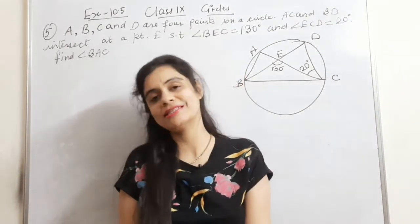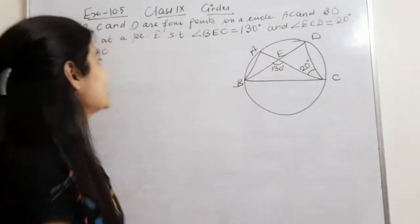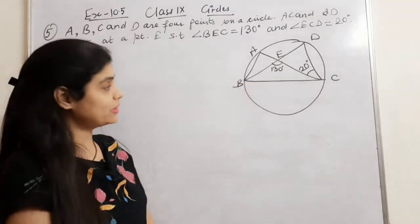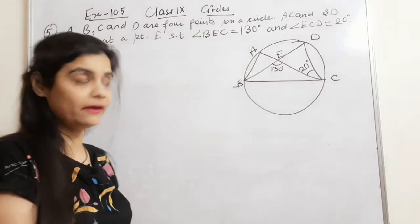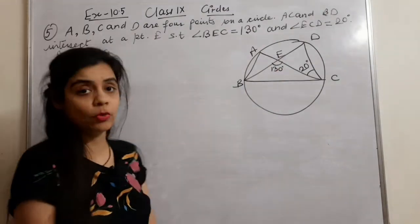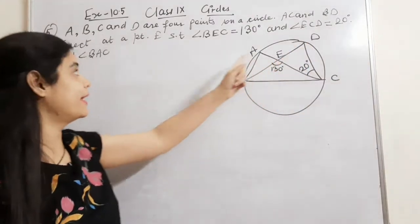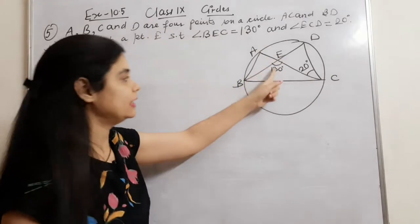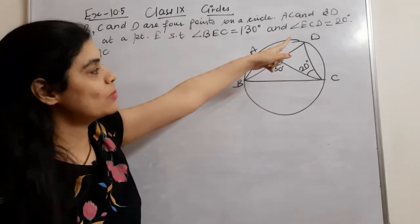We are going to start the fifth question. A, B, C and D are four points on a circle. AC and BD intersect at a point E such that angle BEC is 130 degrees and angle ECD is 20 degrees.